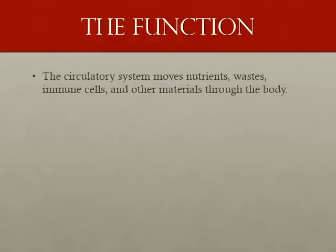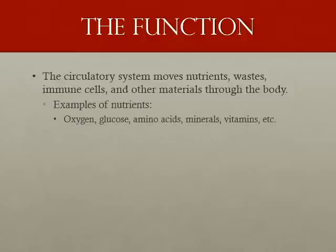The circulatory system only has one job, and that's to move materials such as nutrients and cell wastes through the body. Nutrients are things like oxygen, carried by red blood cells, glucose, amino acids, lipids, cholesterol, minerals, and vitamins.